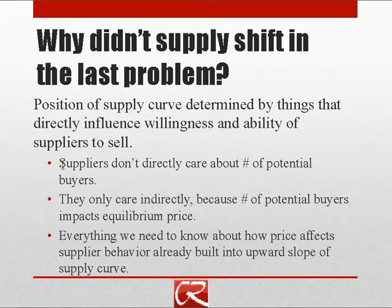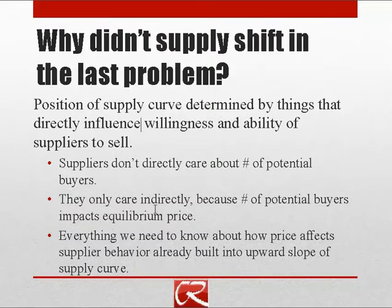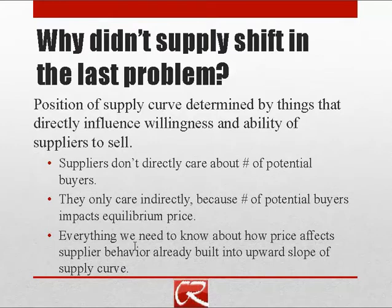The position of the supply and demand curves is influenced by the things that suppliers and buyers directly care about. The position of the supply curve is influenced by what suppliers directly care about other than price, and the position of the demand curve is influenced by what buyers directly care about. Suppliers don't directly care about the number of potential buyers — they only care about it indirectly because it impacts the equilibrium price. Everything about how price affects supplier behavior is already built into the upward slope of the supply curve. If you find yourself accidentally shifting the supply curve in these examples, know that it's a very common mistake.